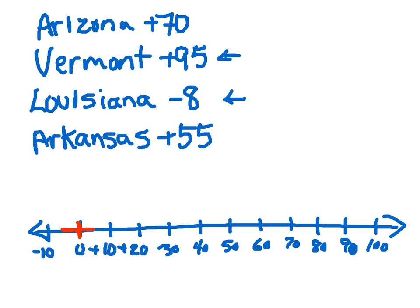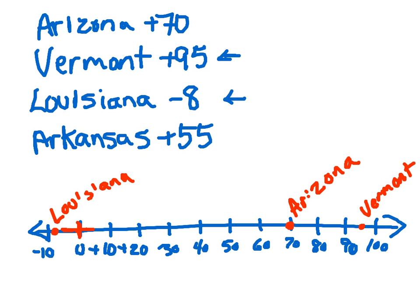Now we need to plot our data. Shouldn't be too difficult. Arizona is at a plus 70, so we're going to put that data point right there and label that as Arizona — lowest point at 70 feet above sea level. Vermont at 95, halfway between there, and we'll label that Vermont. Louisiana at minus 8, negative 8, so that's right there. And Arkansas is at a plus 55. So just labeling these points, you know to label the negatives on the left side of 0, and the positives on the right-hand side.